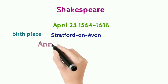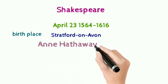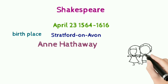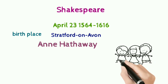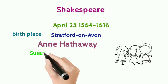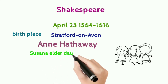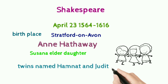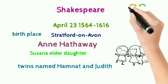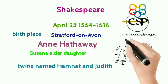He married Anne Hathaway and they had three children. The elder one, a daughter, was named Susanna, and the other two were twins named Hamnet and Judith.